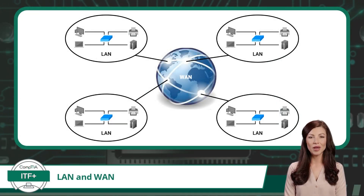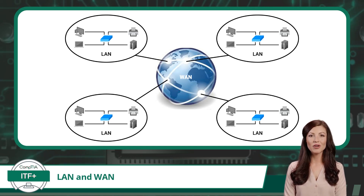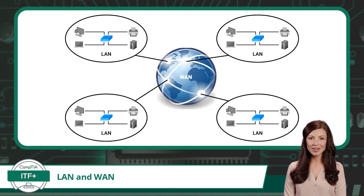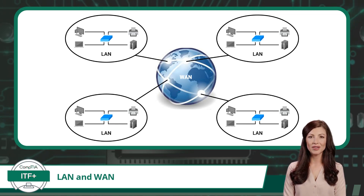Now that we understand what a LAN and WAN are, how do they work together? LANs and WANs are interconnected and complementary components of an overall network infrastructure. LANs serve as the foundation for local communication and resource sharing within a limited area, providing fast and efficient connectivity between devices in close proximity. They enable seamless collaboration, file sharing, and access to shared resources within a building, small office, or home. A WAN extends the reach of LANs by connecting geographically dispersed networks.